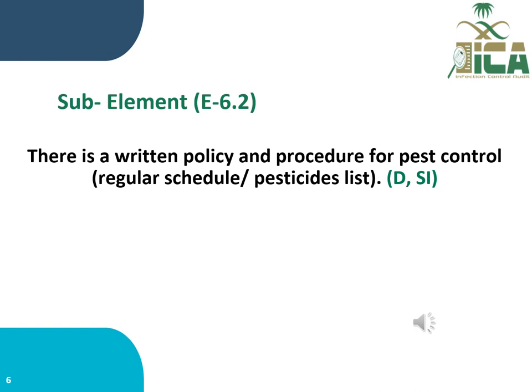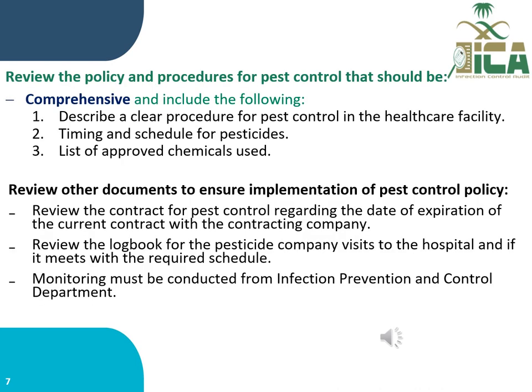Sub-element E6.2 states that there is a written policy and procedure for pest control based on a regular schedule, with a pesticide list included. Evaluating this sub-element requires document review: assessing the pest control policy, which should describe a clear procedure, the timing and schedule for pesticide application, and the list of approved chemicals used for pest control management.